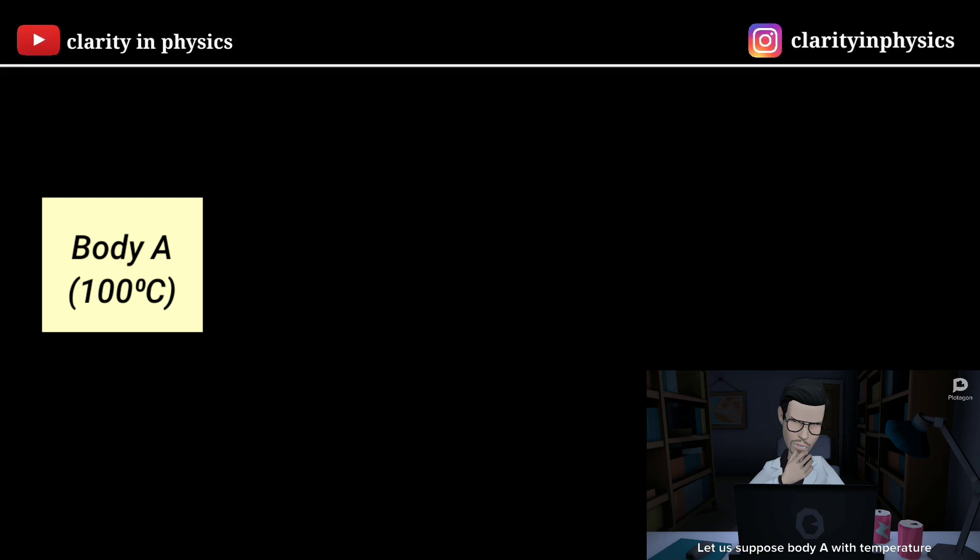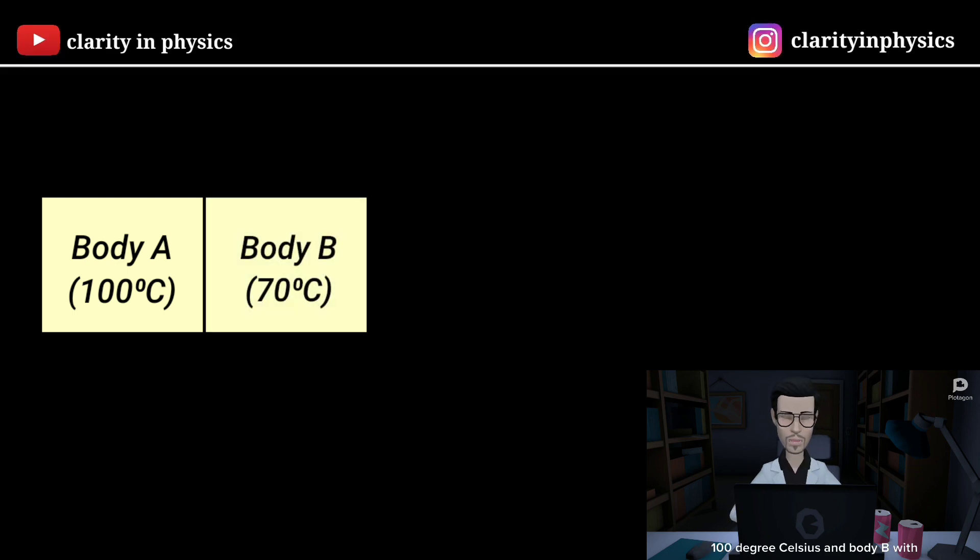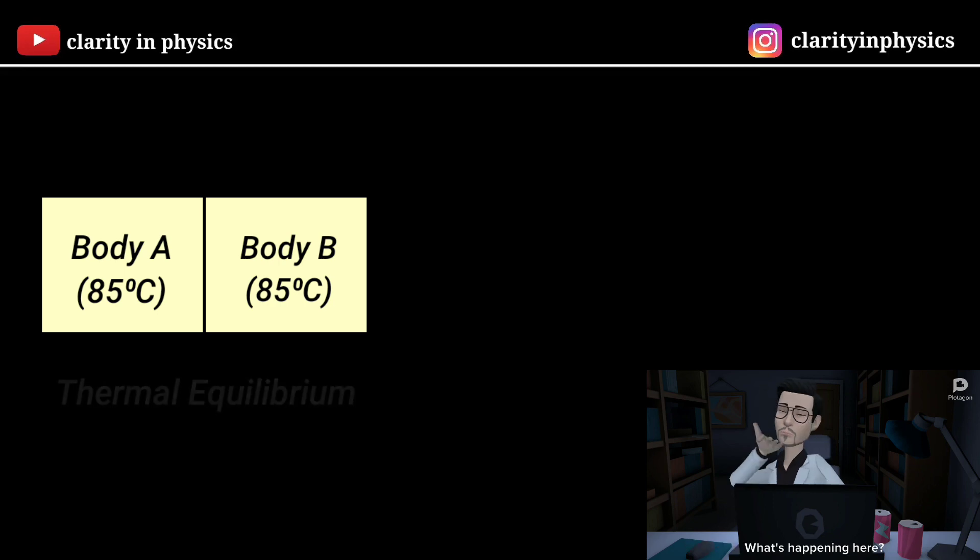Before further proceeding let's look on a concept. Let us suppose body A with temperature 100 degree Celsius and body B with 70 degree Celsius are placed in thermal contact. After some time the temperatures equalize, the two body are then in thermal equilibrium. What's happening here? Why temperature equalize after some time when the bodies are placed in thermal contact.